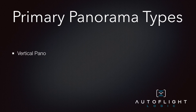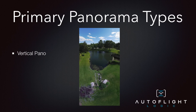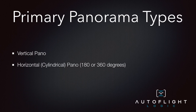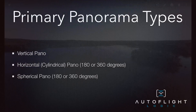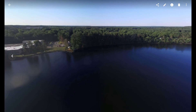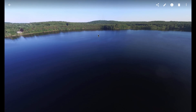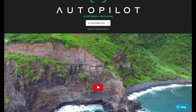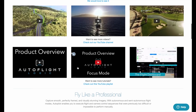First, a vertical pano where Autopilot takes three to five pictures only while tilting the gimbal to create a long vertical shot. Second, a horizontal or sometimes called a cylindrical pano where the quad takes pictures in each direction as well as while tilting the gimbal. These types of panoramas can now be hosted on sites like Facebook and DJI SkyPixel, amongst many others. The power of Autopilot is in its flexibility. Once you understand how Autopilot works, all the modes tend to make sense and work well together.